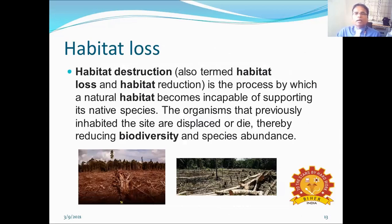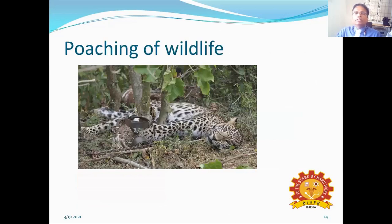Habitat destruction, also termed as habitat loss and habitat reduction, is the process by which a natural habitat becomes incapable of supporting its native species. The organisms that previously inhabited the site are displaced or die, thereby reducing biodiversity and species abundance. Poaching of wildlife through illegal hunting reduces the number of wildlife animals, eventually making them endangered and threatened, and ultimately leading to the extinction of wild animals.